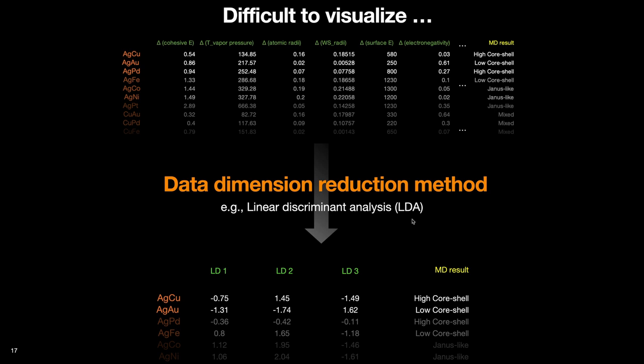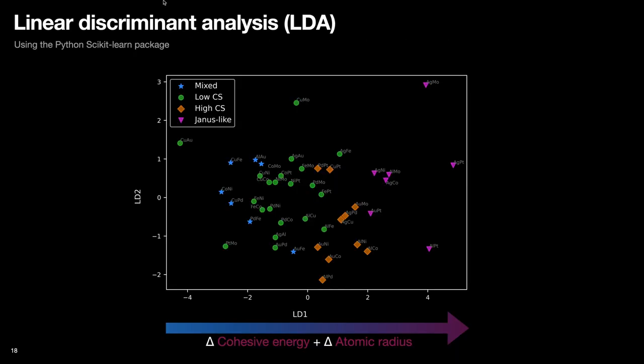So using LDA, we could reduce the eight feature dimensions into three dimensions, but with minimal loss of original information. So here are the results of such analysis. It can be done quite easily using the Python scikit-learn package, by the way.